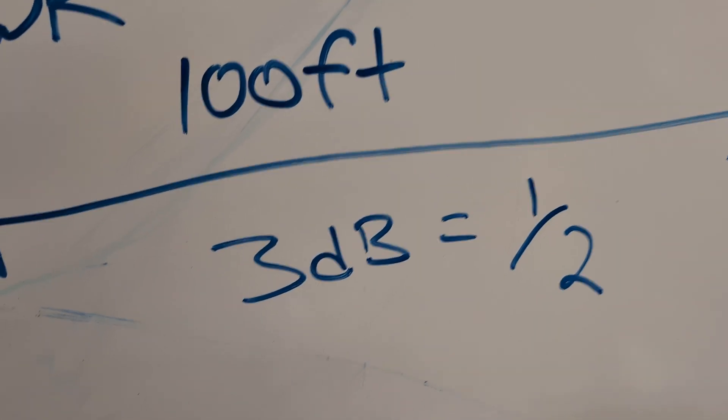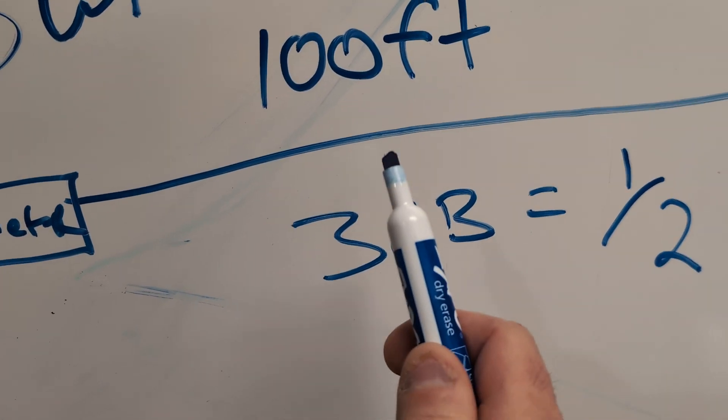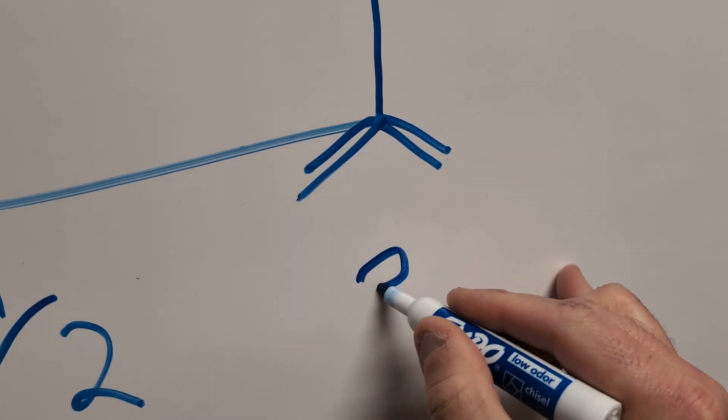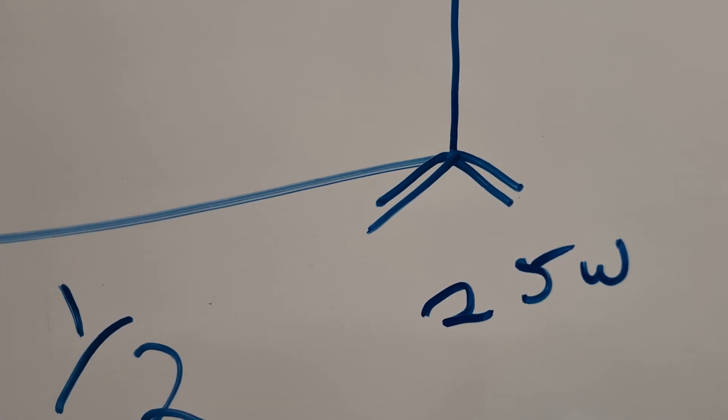Now remember, if you have 3 decibels of loss in 100 feet, that means by the time you get to the antenna, you have 25 watts at the antenna.